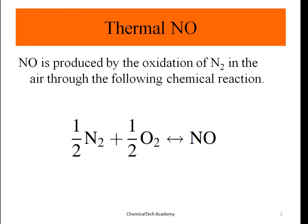Thermal NO is produced from atmospheric nitrogen, and fuel NO is produced from the nitrogen content of different materials or fuels. Thermal NO is produced by the oxidation of nitrogen in the air. As you know, air consists of approximately 79% nitrogen and 21% oxygen.